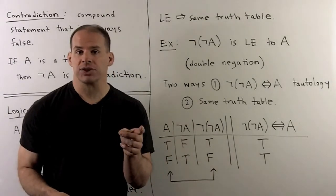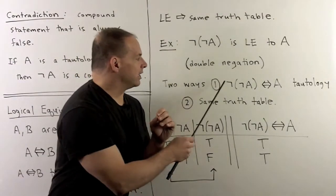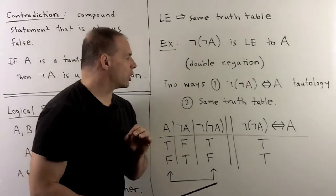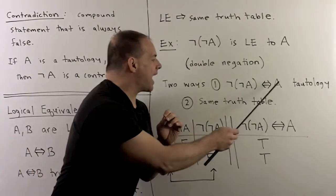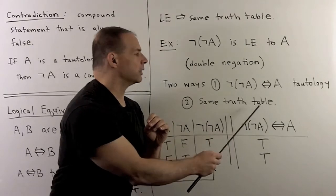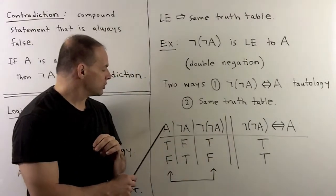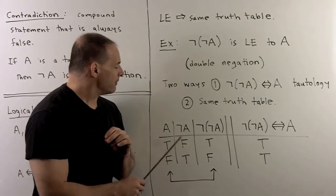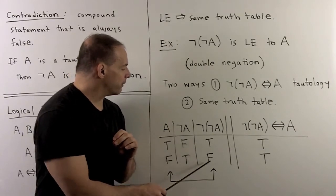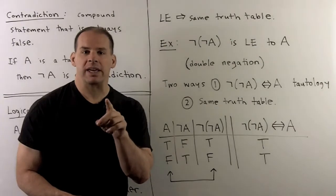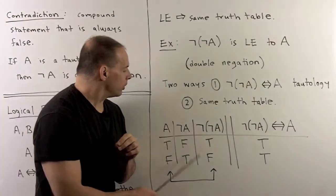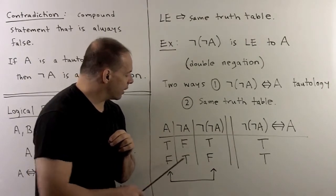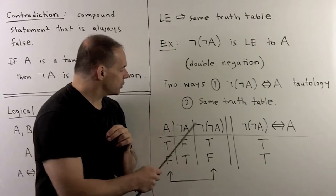There are two ways to show double negation. I can either show that not-not-A biconditional A is a tautology, or show that not-not-A and A have the same values in their truth table. Starting with A as true or false, we take the negation to get false and true. Taking the negation again gives true and false. Comparing this column with the column for A, we see the truth tables have the same values, so these are logically equivalent.